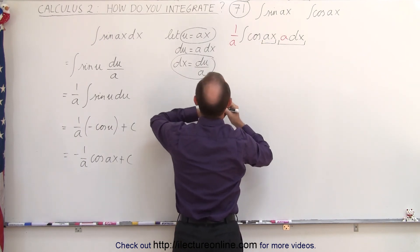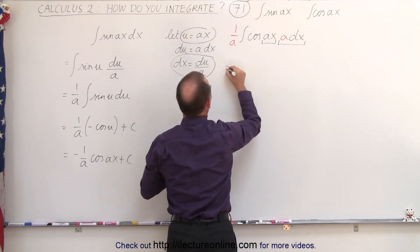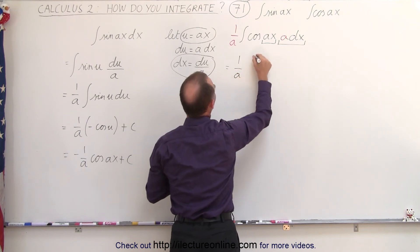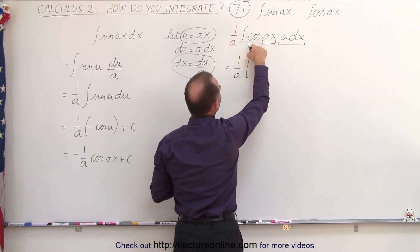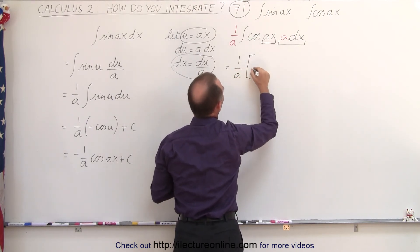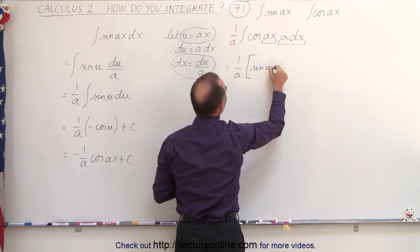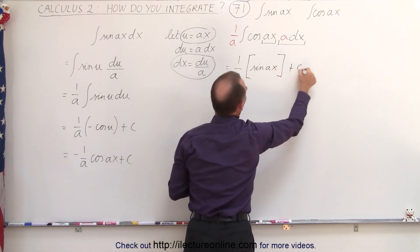So now this becomes equal to 1 over A times the integral of cosine is the positive sine, so this becomes the sine of Ax plus a constant of integration.